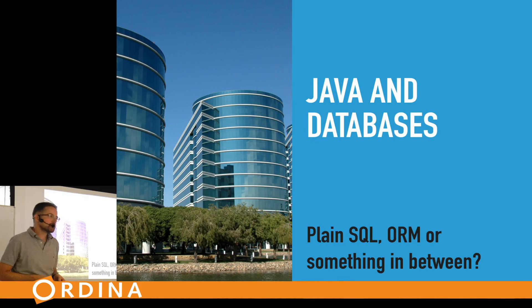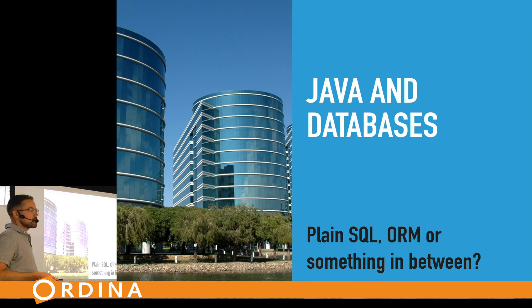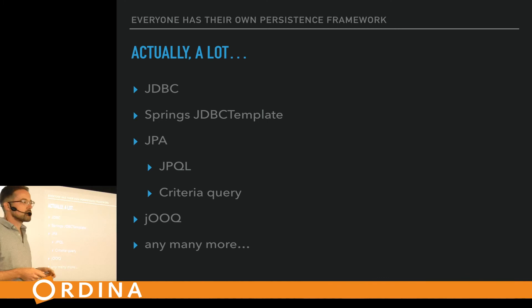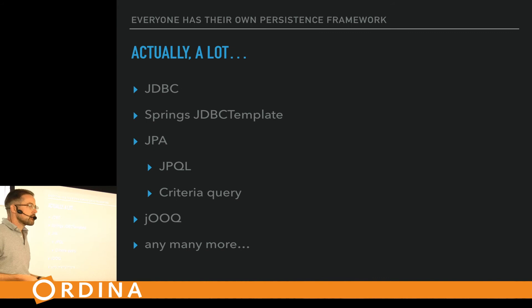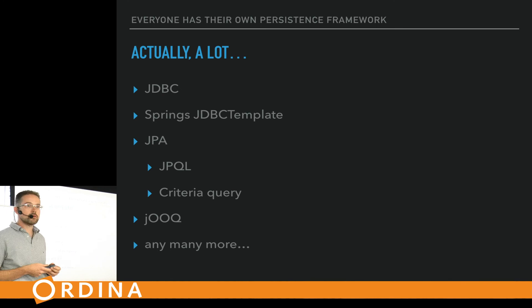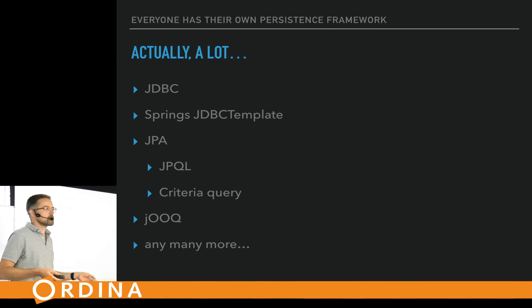Java and databases have a long history. You can communicate from a JVM program with a database in several ways: plain SQL via JDBC, Spring's JDBC Template, JPA — namely Hibernate or EclipseLink — JPQL, Criteria Query, jOOQ, and many more. People always try to remind me there are other options too.